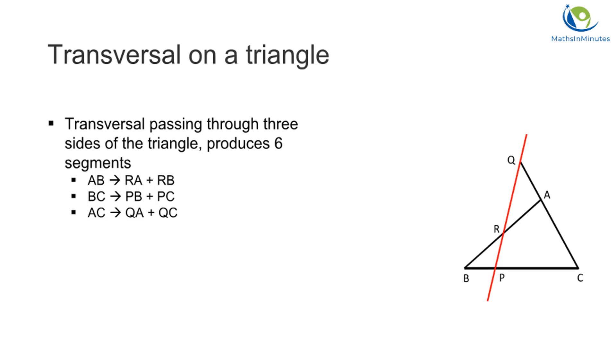If a transversal line passes through three sides of triangle ABC, it intersects the triangle at three points: point P, point Q, and point R. Among the three intersection points, one is on the extended side.